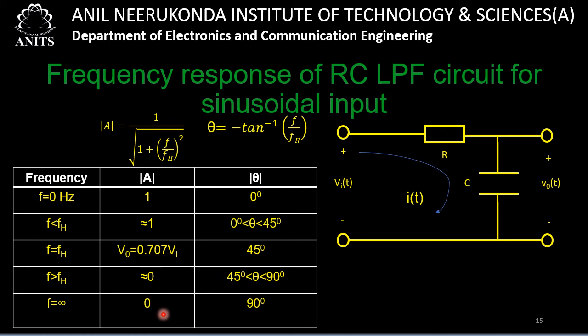This is what we understand from the frequency response of the RC low pass filter circuit for sinusoidal input. We have considered five frequency cases, identified gain and angle for each, and can now plot the magnitude response and phase response.